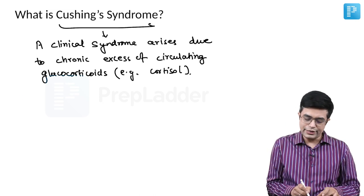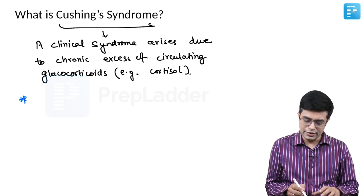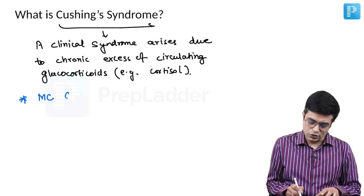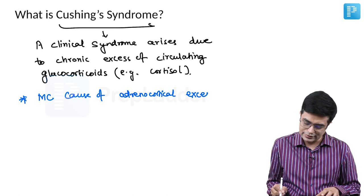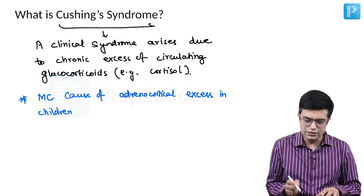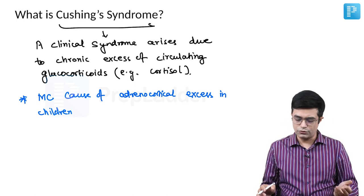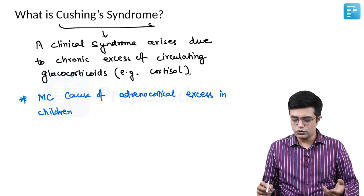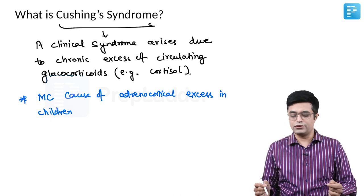An important one-liner — also a neat super-specialty MCQ asked in the past — is that Cushing syndrome is the most common cause of adrenocortical excess in children. The adrenocortical gland produces three sets of hormones: mineralocorticoids, glucocorticoids, and sex hormones. So Cushing syndrome is the most common cause of adrenocortical hyperfunction in children.